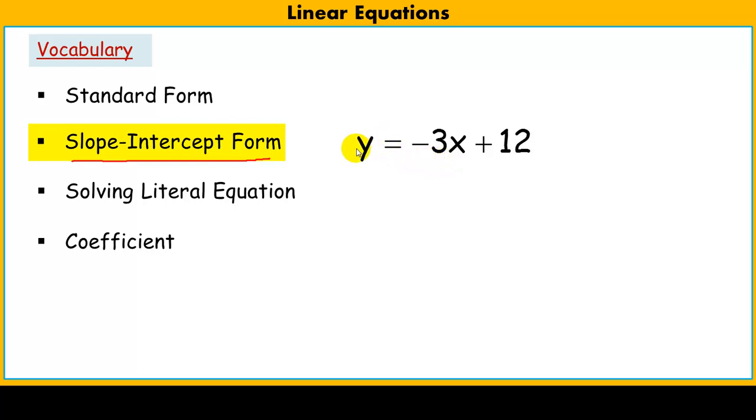Notice now I have y alone. I have a variable term in x with this coefficient of negative 3 and a constant hanging out here. Notice there are just two terms, and I have y alone over here.